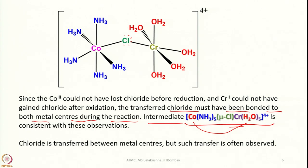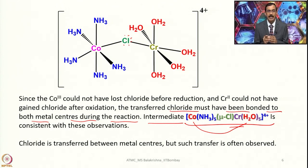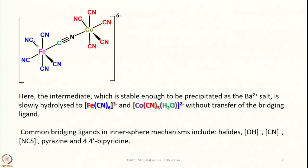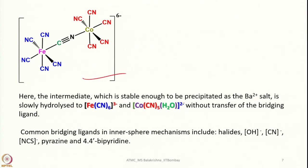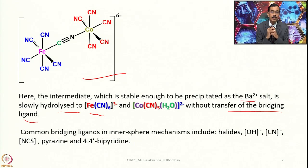Chloride is transferred between metal centers — such a transfer is quite common when we have a bridging-coordination-mode-capable ligand. Looking at another example with cyano complexes, the intermediate is stable enough to be precipitated as the barium 2+ salt, similar to what we saw with Ba[MnO4]. This intermediate is slowly hydrolyzed to Fe(CN)6 3- and Co(CN)5(aqua) 2- without transfer of the bridging ligand — unlike the chloro situation, the bridging ligand is retained on the same metal.